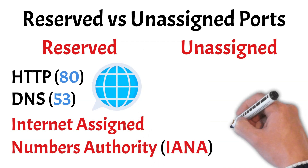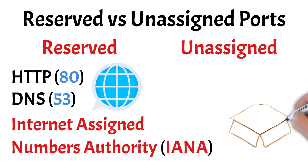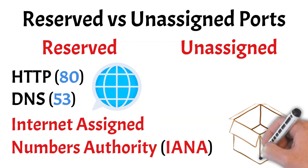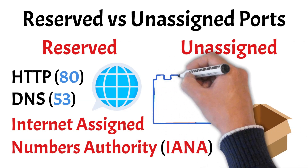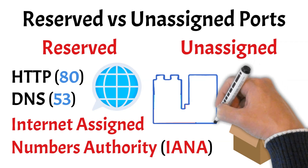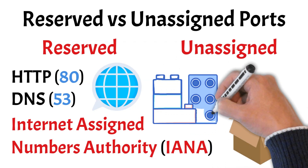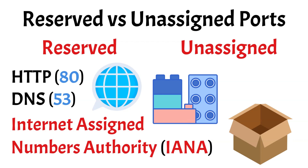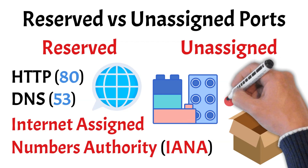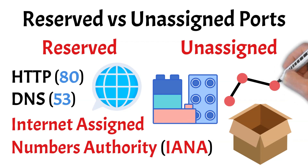On the other hand, unassigned ports have not been officially designated for any specific use and remain available for dynamic allocation by applications or private services. While some unassigned ports may later receive official assignments, others can be used freely by organizations and developers for custom networking needs. Understanding this distinction helps prevent conflicts and ensures efficient port management in networks.